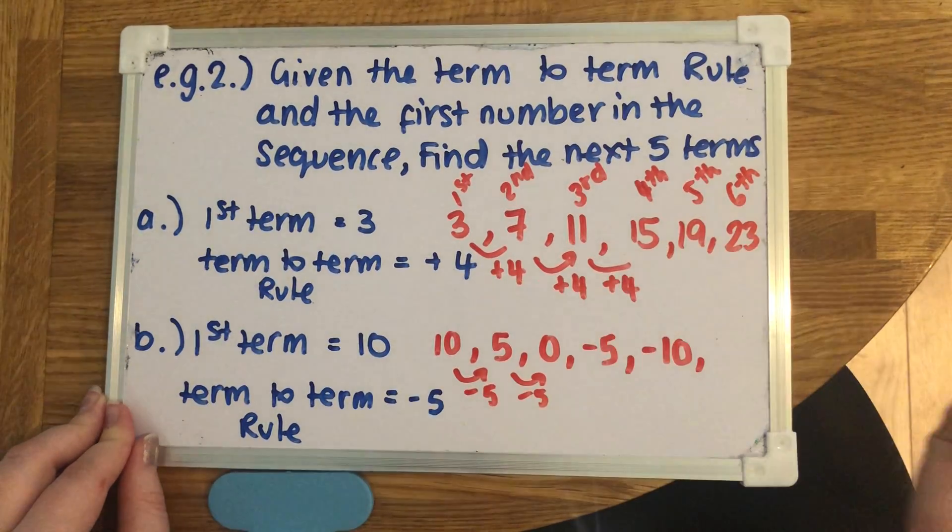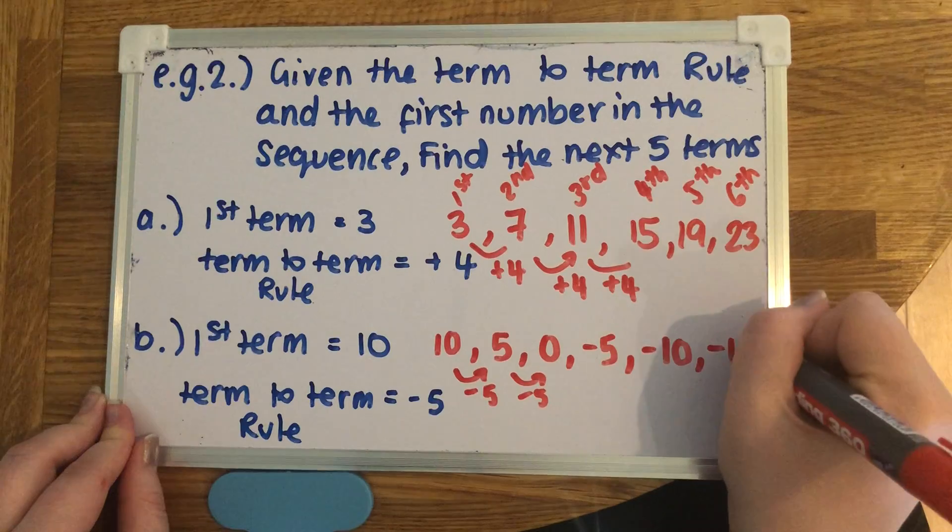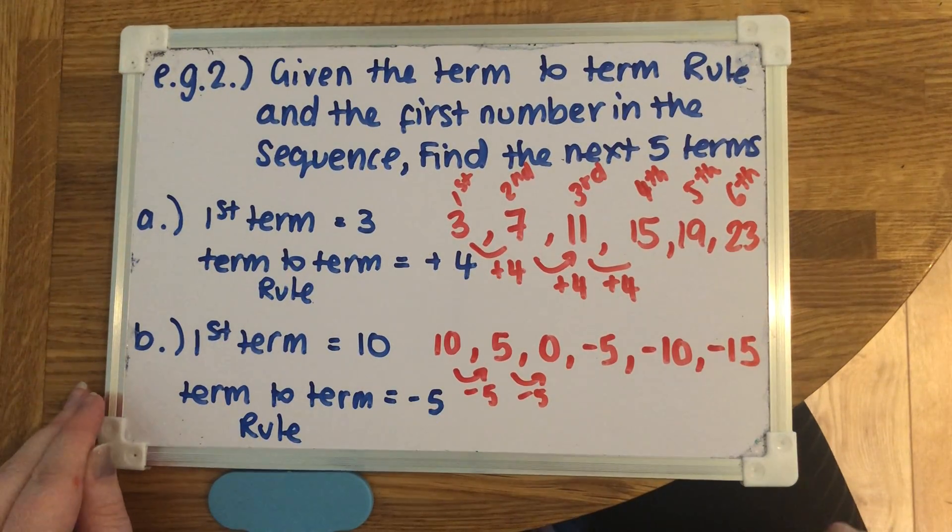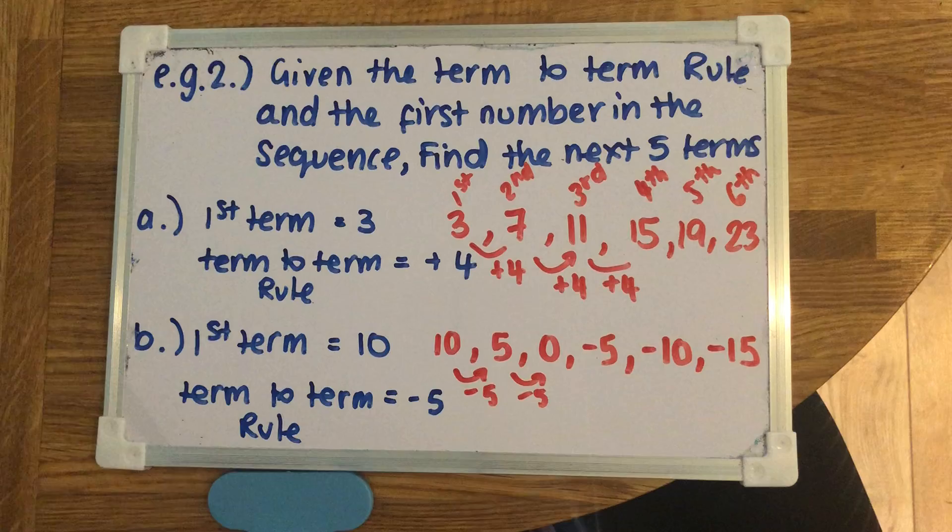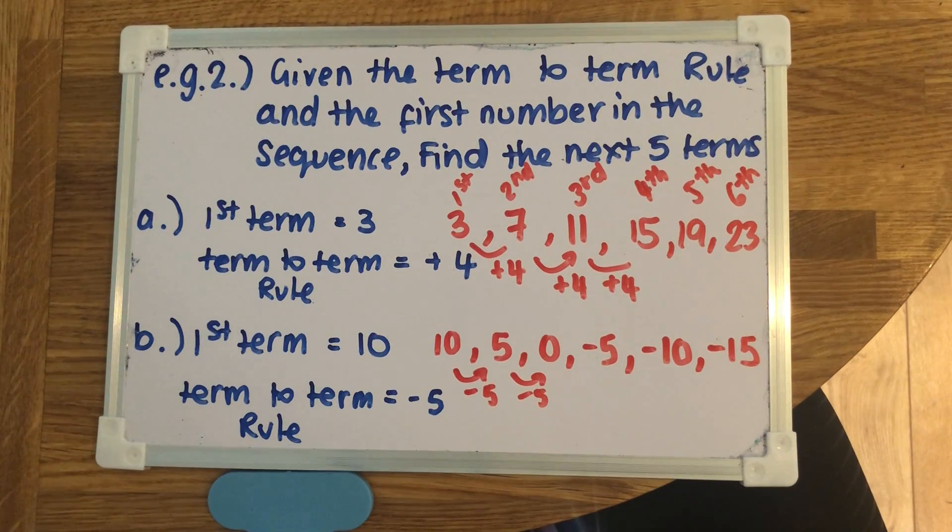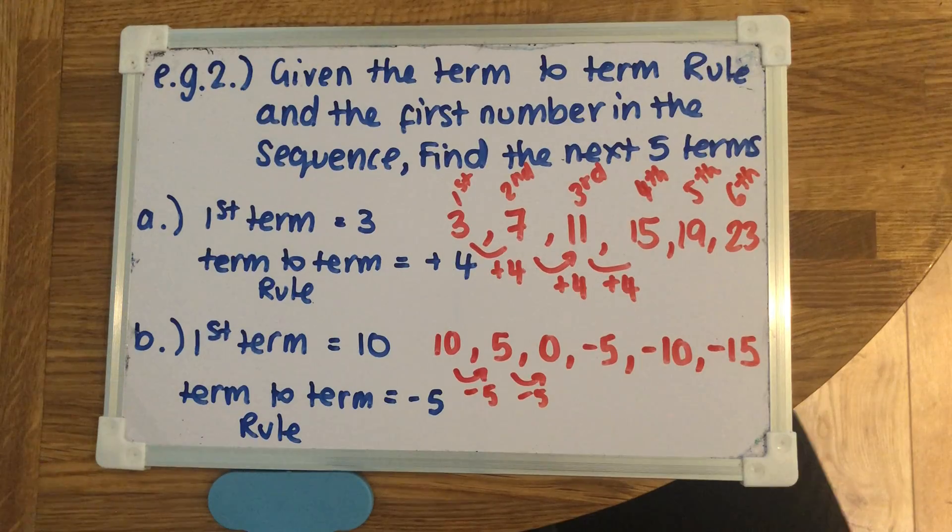And one more because we need six terms, negative 15. Each time I've just kept taking away five from the previous one, and that's what you have to do. Nice and simple, just take your time.